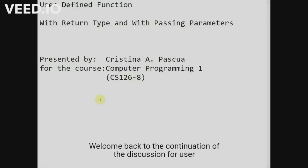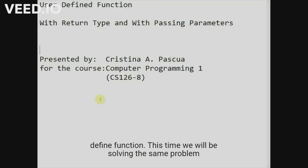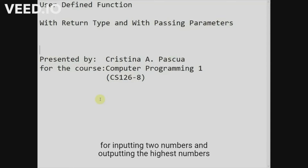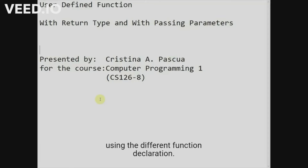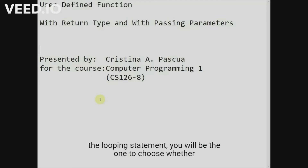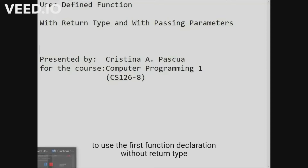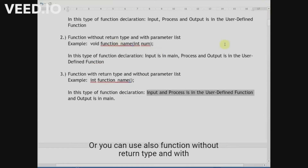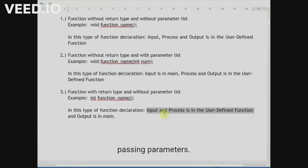Welcome back to the continuation of the discussion for user-defined functions. This time we will be solving the same problem for the solution with return type and with passing parameters. I am showing you different solutions for inputting two numbers and outputting the highest number using different function declarations. You will be the one to choose whether to use the function declaration without return type and without passing parameter, or without return type and with passing parameter.